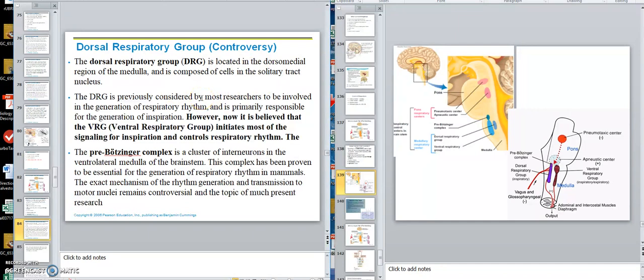It was previously considered to be the main one to do inhalation, inspiration. Now remember, inspiration is active, so you need an inspiratory center. That, for years, was considered to be what spontaneously started you to breathe. Then we found this pre-Bötzinger complex, a cluster of interneurons in the ventromedial medulla of the brainstem, has been proven to be essential for the generation of respiratory rhythms in mammals. It actually governs the rhythm, it seems like, by riding herd or checking on the VRG and DRG.